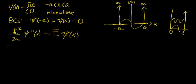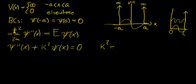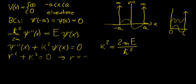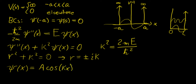We rearrange the equation as the second derivative of ψ plus k squared times ψ equals zero, where we define k squared equals 2mE over h-bar squared. Finding the characteristic equation gives r squared plus k squared equals zero, so r equals plus or minus ik. This leads to the general solution: ψ(x) = A cos(kx) + B sin(kx). To find constants A and B we apply the boundary conditions.